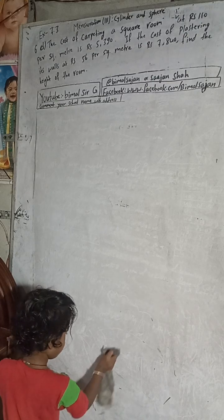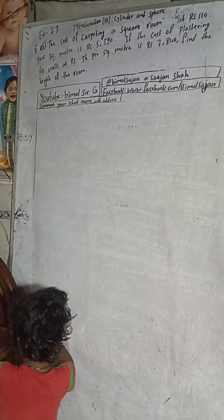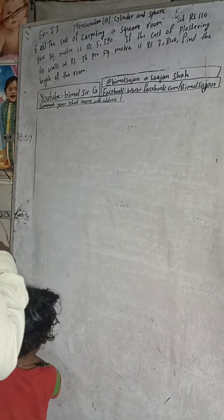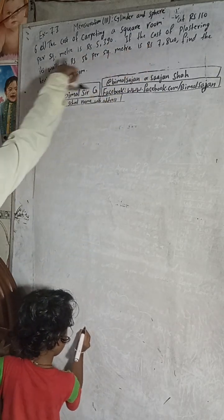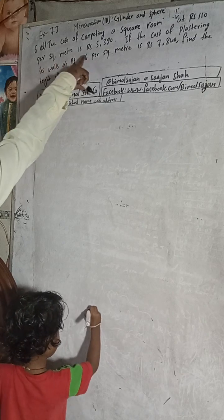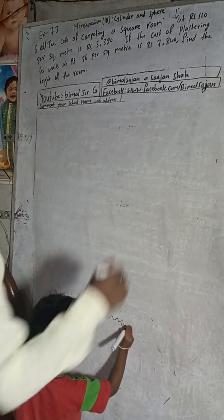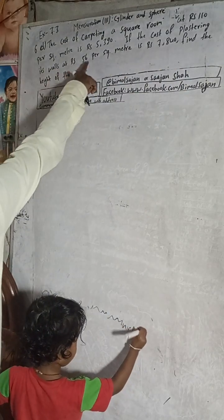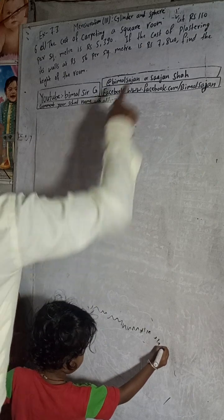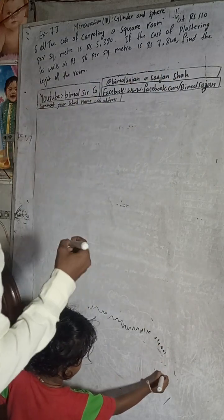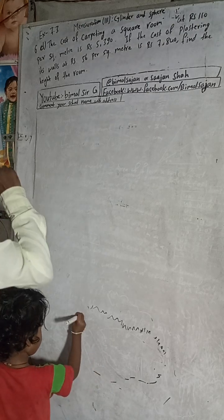So keep watching, keep supporting. Now let's start this solution. The cost of carpeting a square room at a rate of Rs. 110 per square meter is Rs. 5,390. If the cost of plastering its walls at a rate of Rs. 56 per square meter is Rs. 7,840, find the height of the room.